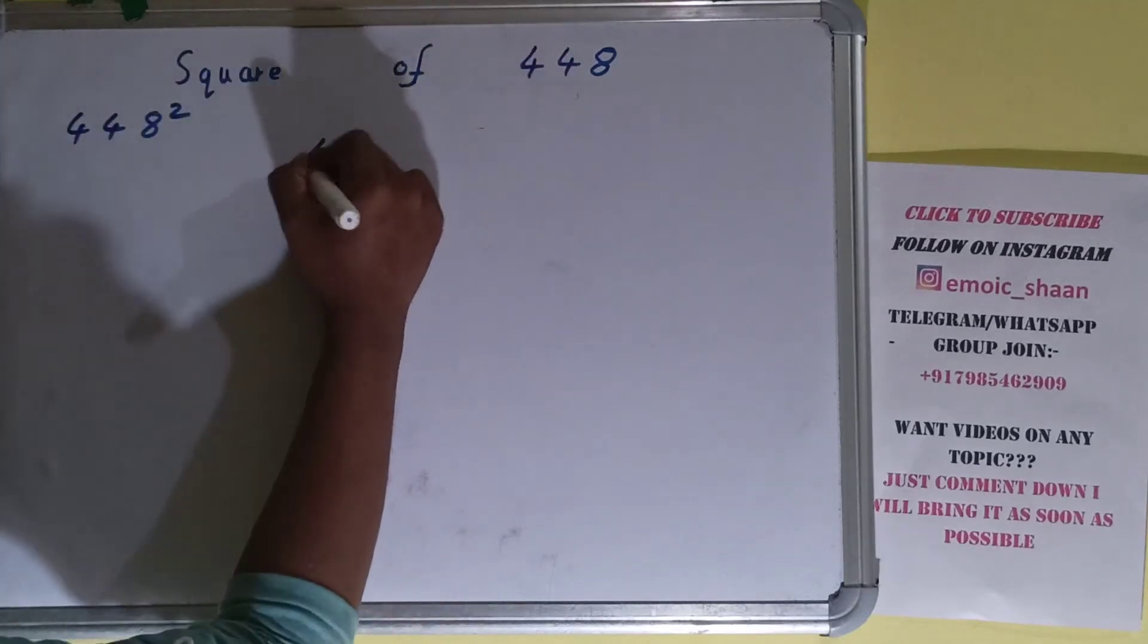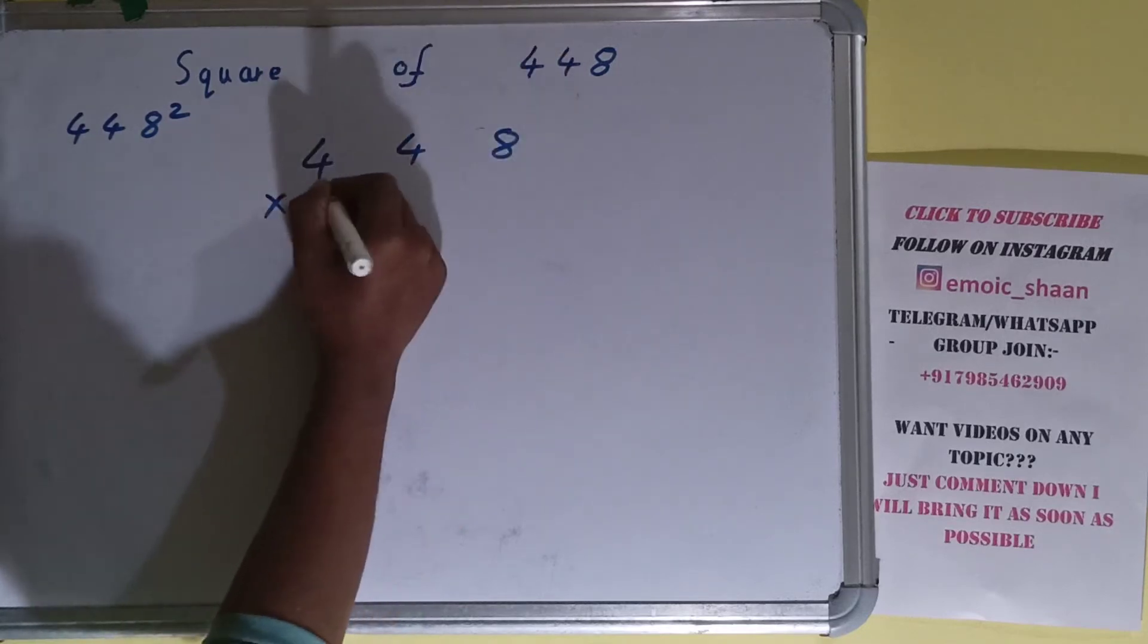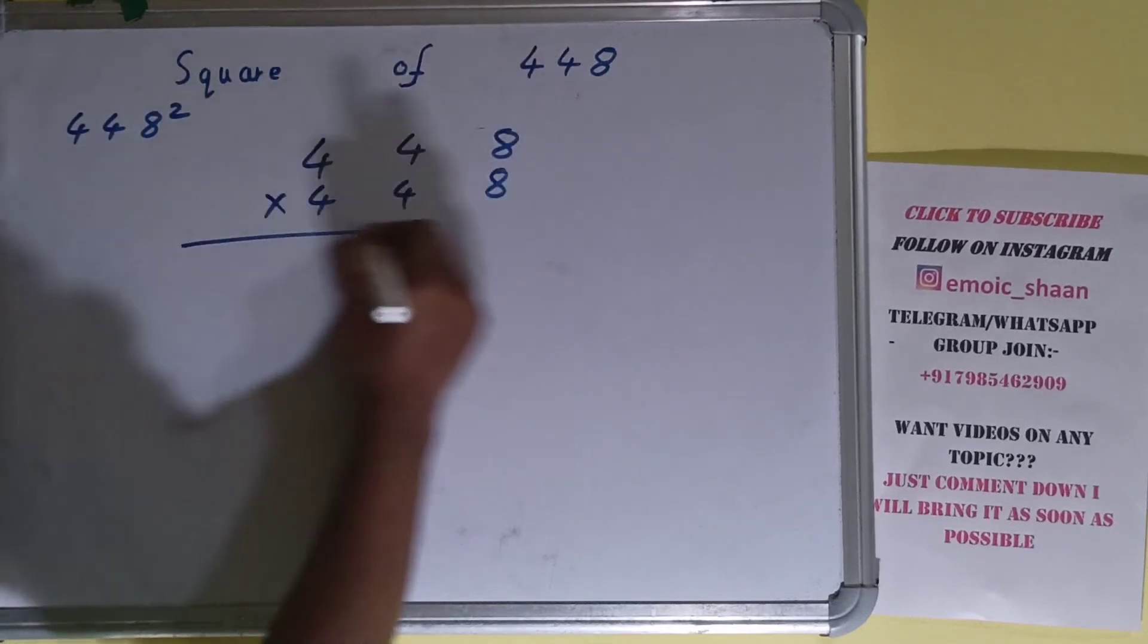The number here is 448. To find square of it, we need to multiply by itself, that is 448, and do the multiplication.